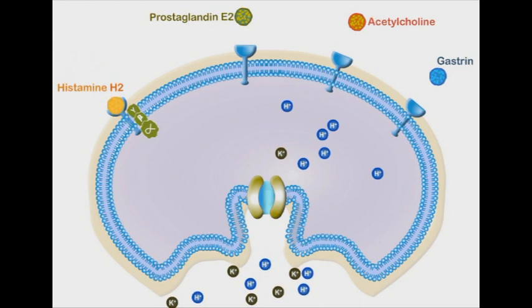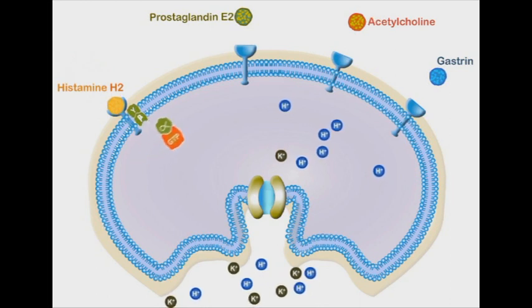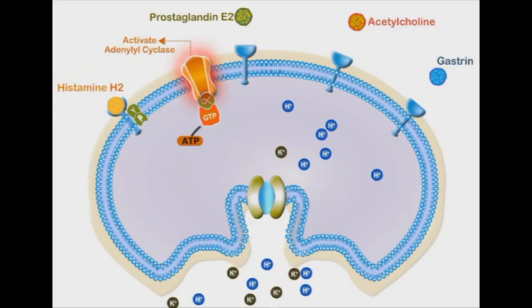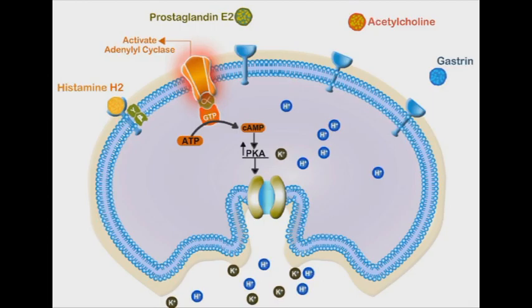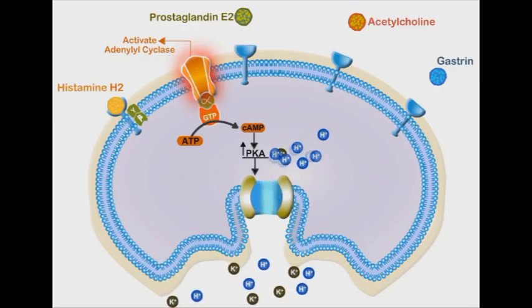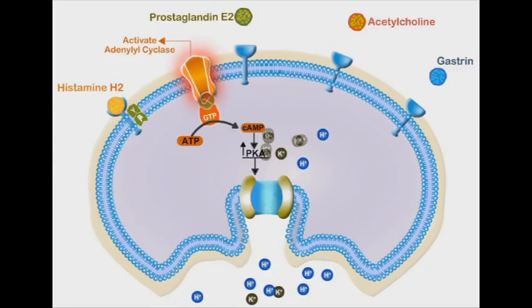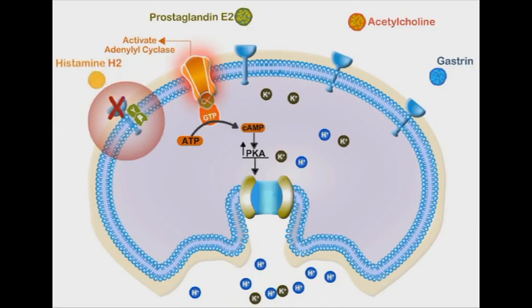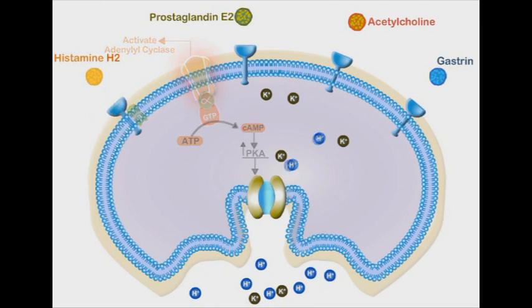Binding of histamine 2 molecules to their G-coupled receptors results in the activation of adenyl cyclase enzyme. The active enzyme in turn increases the activity of protein kinase A, which enhances proton pump function and acid secretion. As expected, blocking of histamine 2 receptors will reduce proton pump activity and acid secretion.